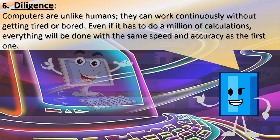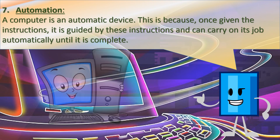6. Diligence. Computers, unlike humans, can work continuously without getting tired or bored. Even if it has to do a million calculations, everything will be done with the same speed and accuracy as the first one. 7. Automation. A computer is an automatic device. Once given instructions, it is guided by those instructions and can carry on its job automatically until it is complete.